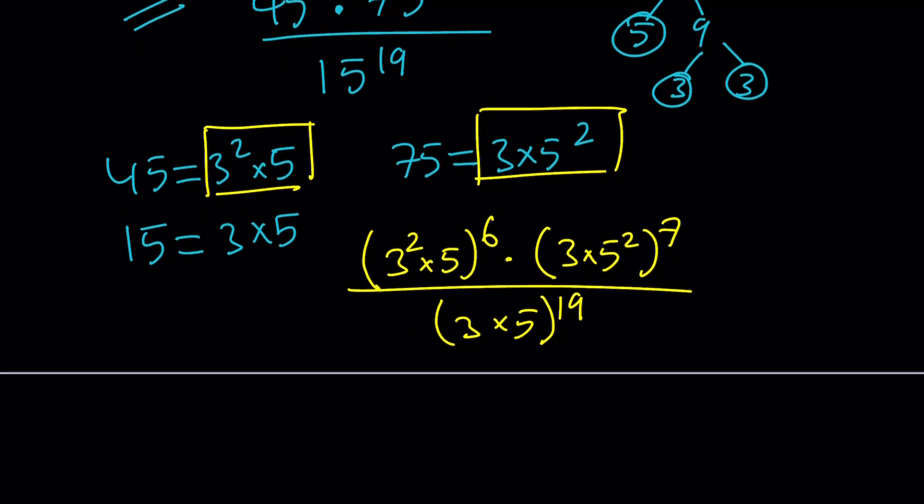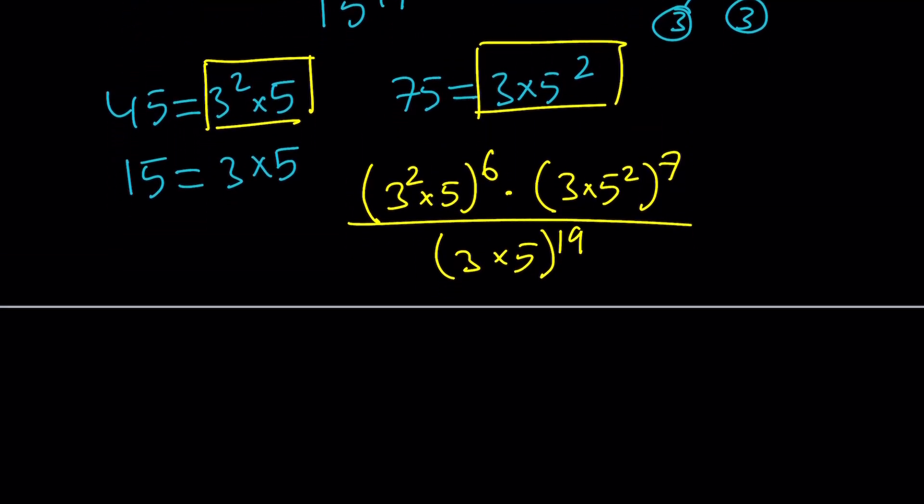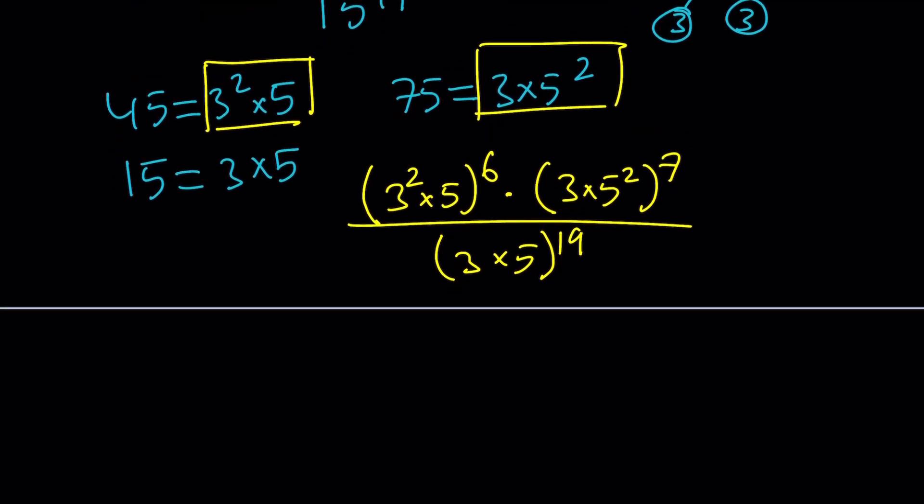So let's go ahead and use the power property and product property. What do I mean by that? Two things. First of all if you have (ab) to the nth power that's a to the n times b to the n. And if you have (a to the x) to the power y, this can be written as a to the power xy. So these two properties we're going to be using here.